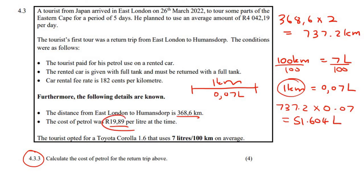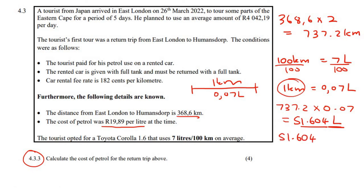Now, the petrol price is 19 rand and 89 cents for every single liter. We used 51.604 liters, so to work out the price we calculate 51.604 multiplied by 19.89, and that comes to 1,026 rand and 40 cents, rounded to two decimal places.